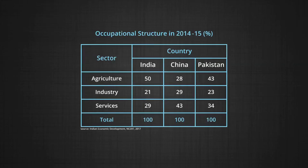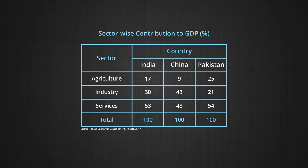Table three gives the occupational structure in 2014-15. This table shows that dependency on the agricultural sector in China is the least, followed by Pakistan, while fifty percent of India's population still continues to depend on agriculture. Industrial and service sectors in China are larger as compared to India and Pakistan, giving China an edge towards greater development. Table four shows sector-wise contribution to GDP. The least contribution to GDP is from agriculture for all three countries, while the service sector makes the largest contribution in India and Pakistan, portraying an emerging service sector playing a major role in development.